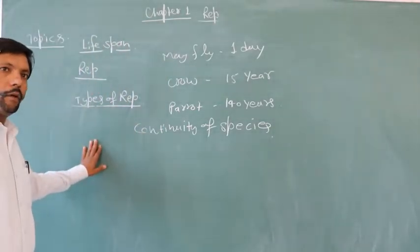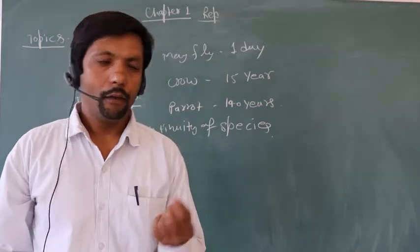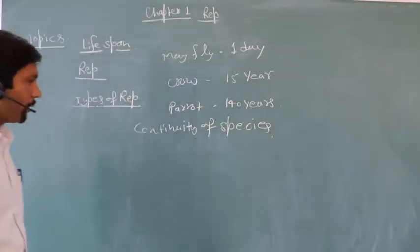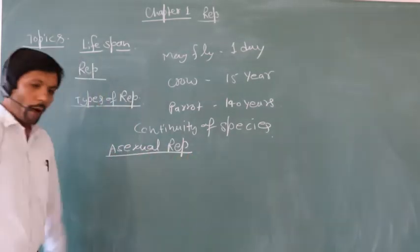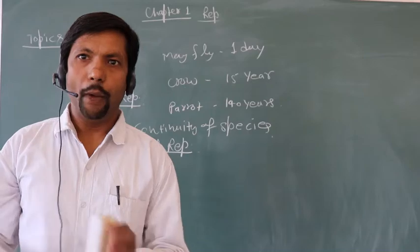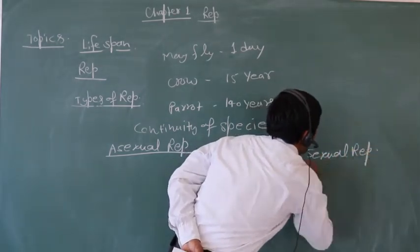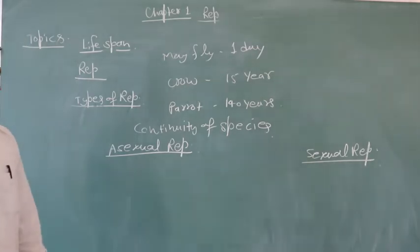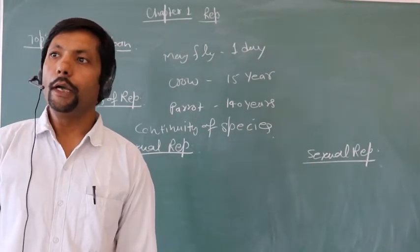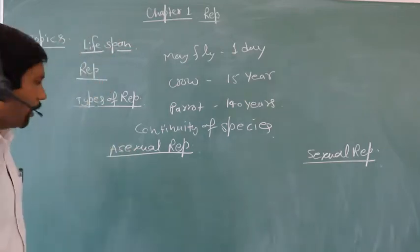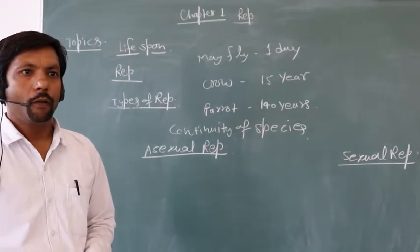Some organisms involve only a single parent to reproduce. For example, a rose plant can grow with the help of a single twig — such types of reproduction are called asexual reproduction. While other organisms that involve two parents for reproduction are called sexual reproduction. In asexual reproduction, a single parent is involved, there is no gamete formation, and hence no fertilization. Without gamete formation and fertilization, new organisms are produced.